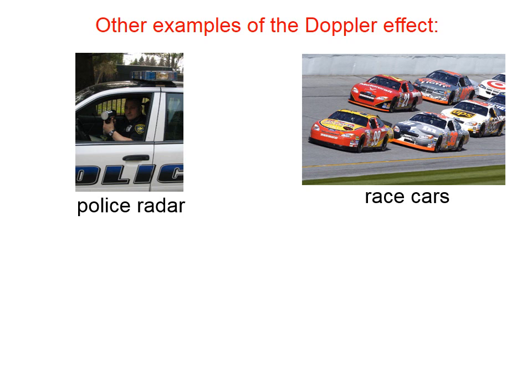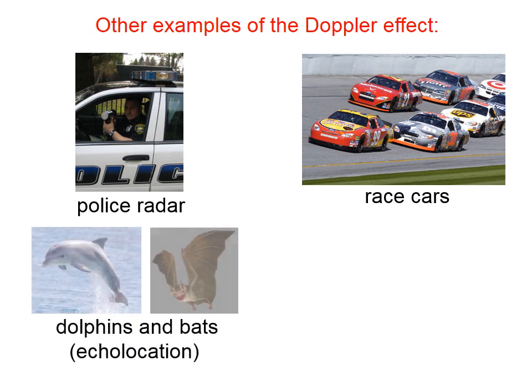Police radar guns operate on the same principle. A certain frequency is emitted by the radar gun, it hits a moving vehicle and comes back. Based on the motion of the vehicle, the returning wave differs slightly from the wave that was emitted, and the radar gun can convert that difference in waves into a speed. You could get in trouble for that if you're not careful.